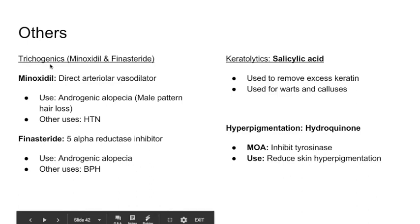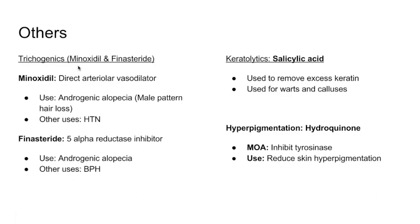Miscellaneous topics: trichogenics — medications that increase hair growth. Minoxidil was initially used for high blood pressure as a direct arteriolar vasodilator. It was discovered that it also promoted hair growth, so a topical form was developed for androgenic alopecia (male pattern hair loss). It can still be used orally for high blood pressure.